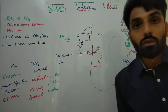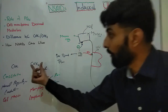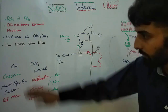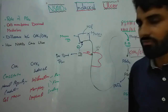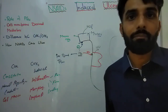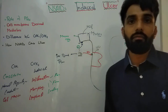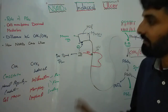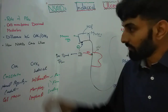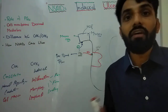Since COX-2 is responsible for causing pain, fever, and swelling, by taking NSAIDs we actually want to block this COX-2 enzyme that is induced during inflammation, so that pain, fever, and swelling can be reduced. We do not want to block the COX-1 enzyme. However, most NSAIDs are basically non-selective — they will block COX-1 as well, along with the desired COX-2.